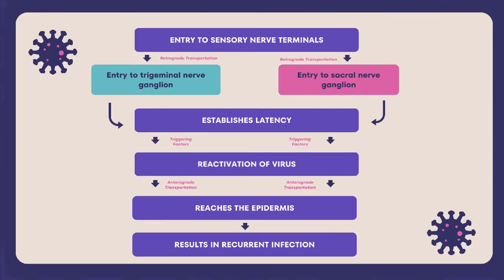In HSV-1 infections, the virus achieves latency in the trigeminal ganglia. In HSV-2 infections, latency occurs in the sacral ganglia. During latency, the viral genome remains in the nucleus of the neuron for life; however, the absence of viral proteins stops the virus's movement and infectious properties.